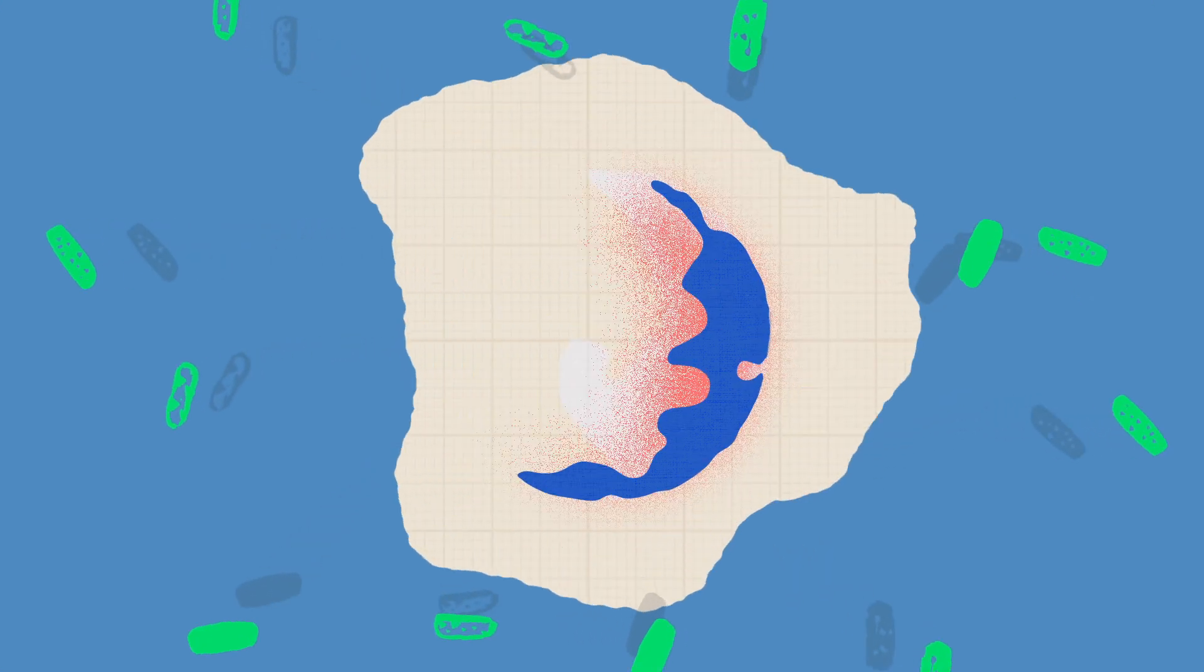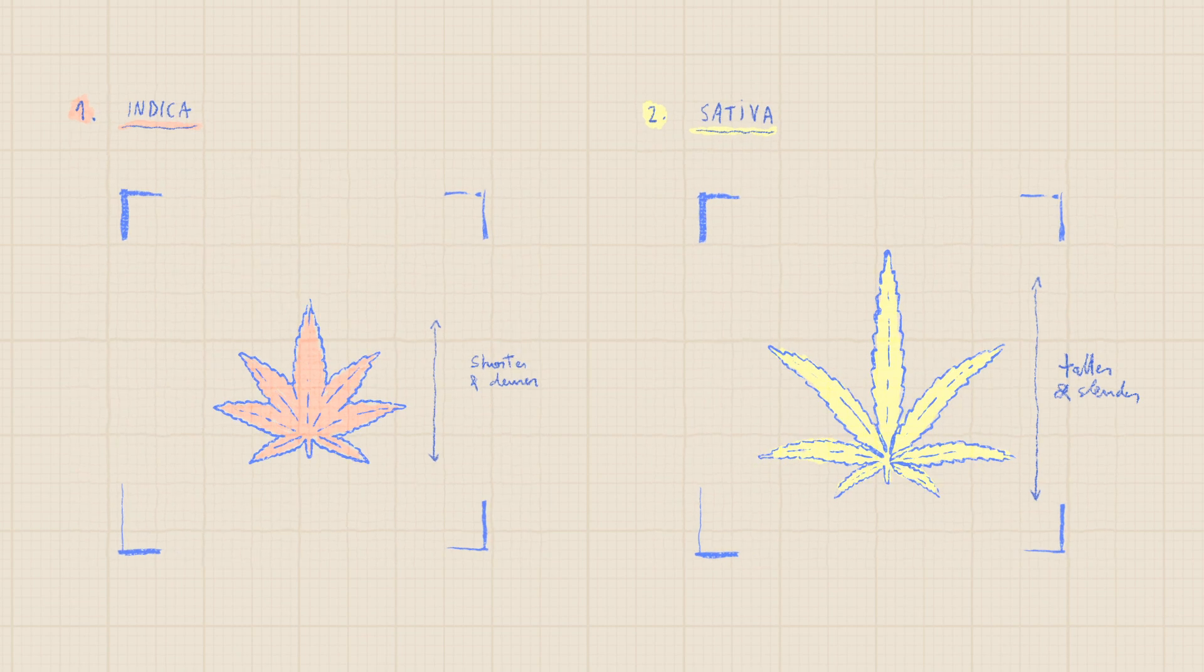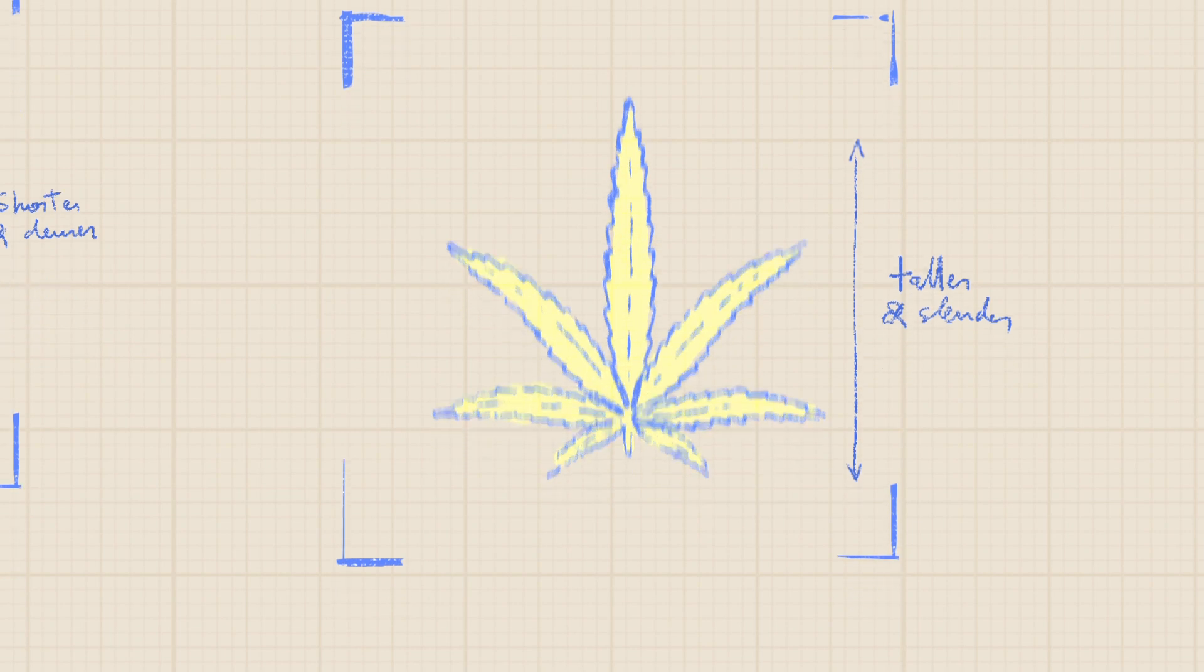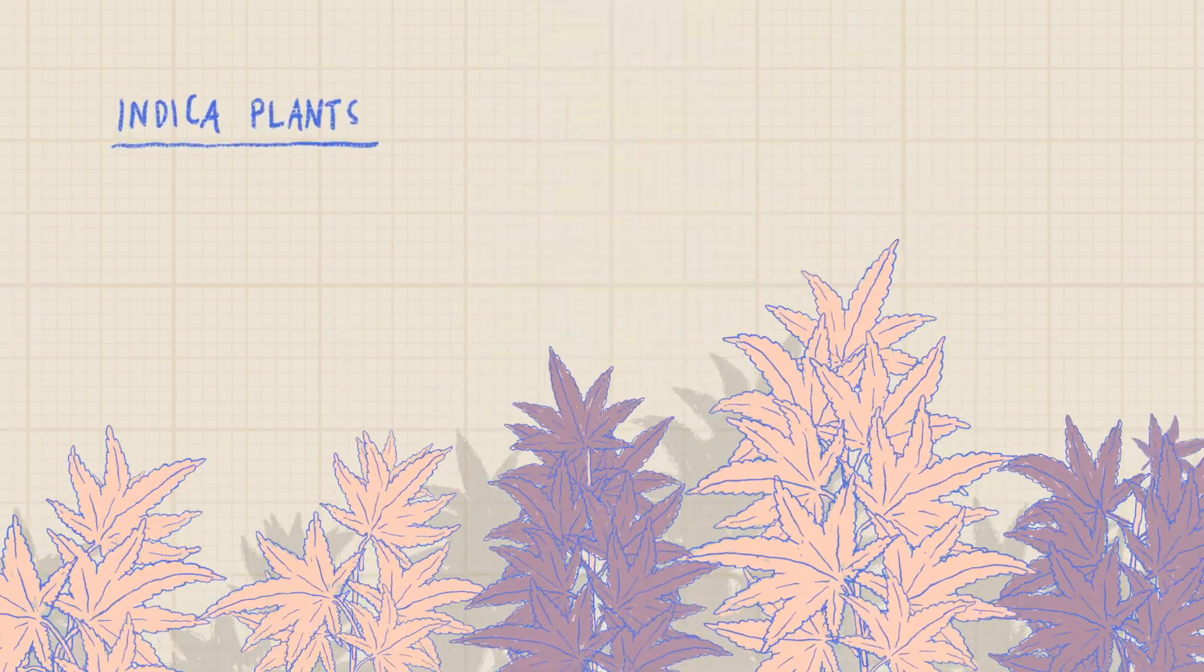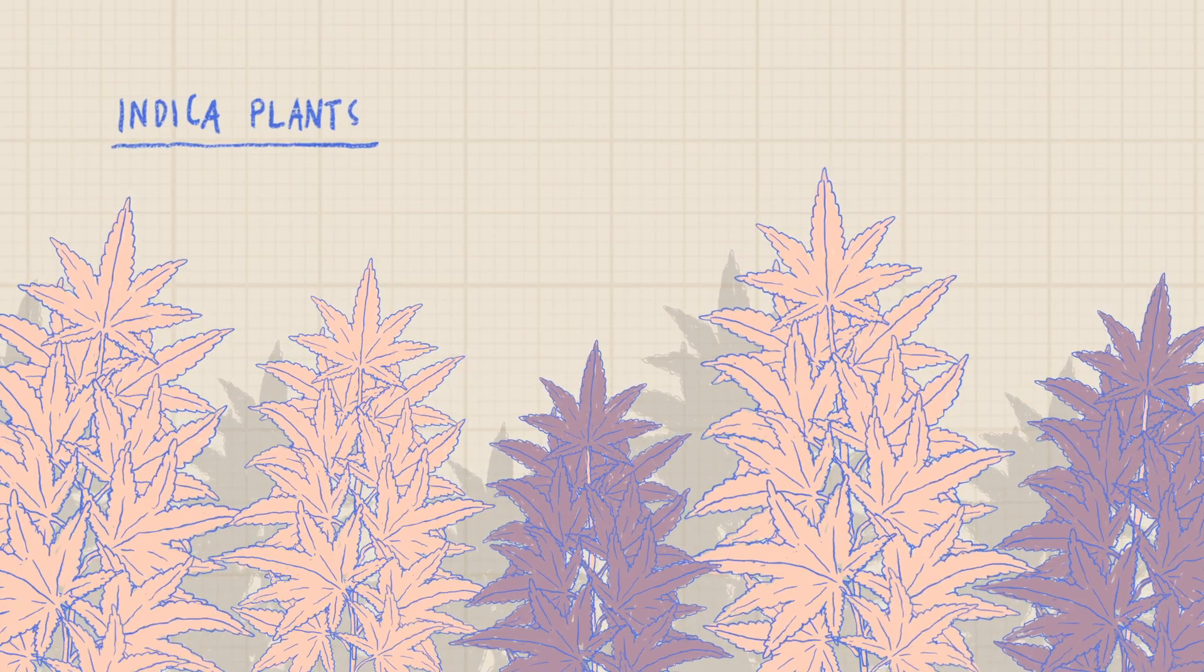Although the immense majority of cannabis plants are considered hybrids, there is a general consensus which divides them into two big groups, indica and sativa. Indica plants are smaller and grow more densely, and their leaves are shorter and wider. They exert a soothing and relaxing effect.